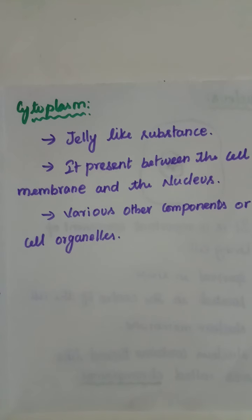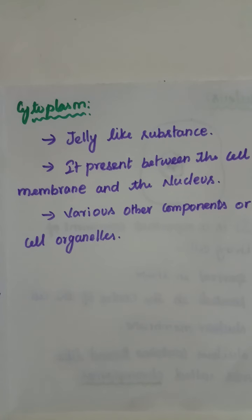There are various other components called organelles present in the cytoplasm. Just like the inner side of the body has blood, organs, and more, these organelles of the cell are present in the cytoplasm. These are mitochondria, Golgi bodies, ribosomes, and endoplasmic reticulum. So many organelles are present in the cytoplasm.